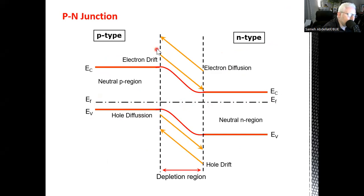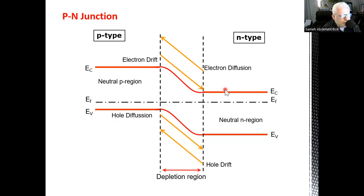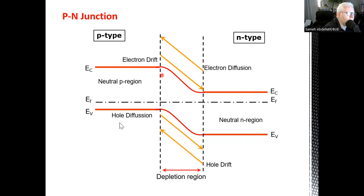In this P-type region, the Fermi level is more close to the valence band, while here in the N-type region it is more close to the conduction band. The reverse is true on the other side: it is more toward the conduction band and far from the valence band. So this is the P-type region and this is the N-type region.